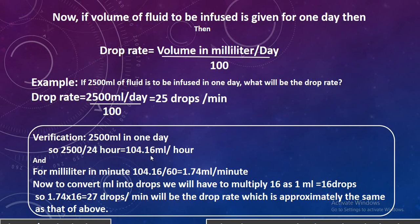Let's verify that. 2,500 mL in one day: dividing by 24 hours gives 104.16 mL per hour. Dividing by 60 minutes gives 1.74 mL per minute. Since 1 mL is equal to 16 drops in an adult set, multiplying 1.74 by 16 comes out to be 27 drops per minute. So 27 and 25 drops — almost the same. Just memorize these simple statements — the Rule of 4 and the daily formula — and you will be able to calculate fluid rates easily.